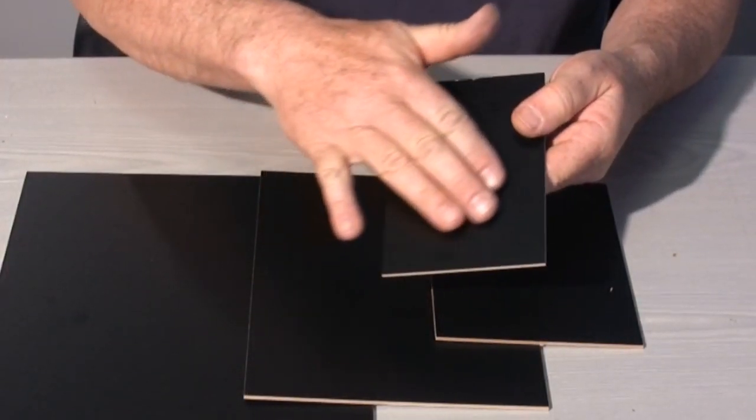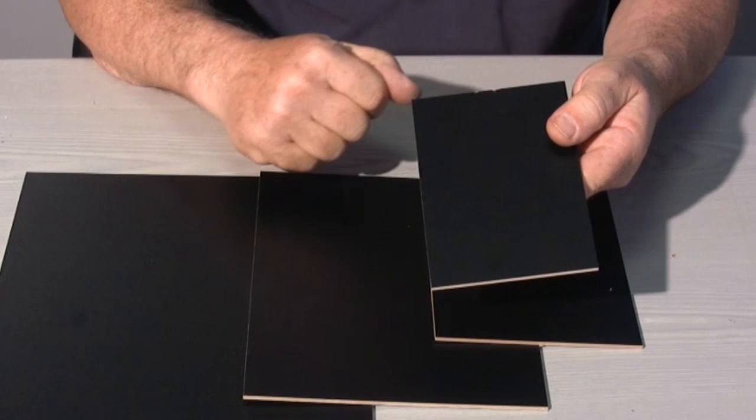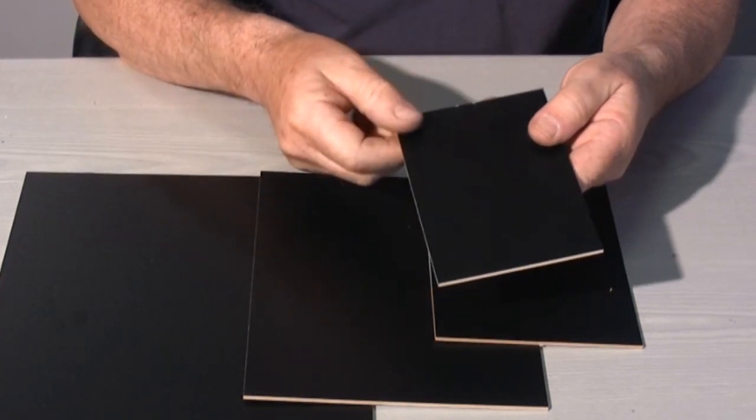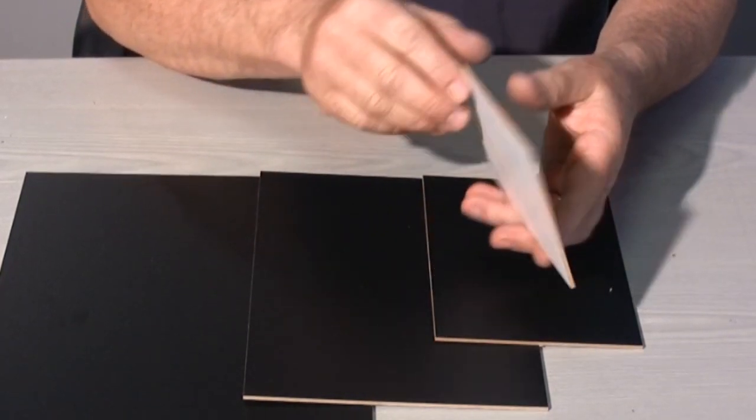One side of the backing board is black with a slightly rough surface so it will show scratches less easily.